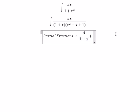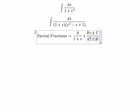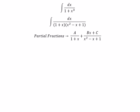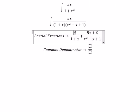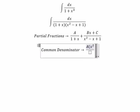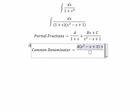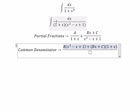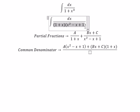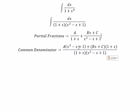Next we need to use a common denominator. So we have A multiplied with x squared minus x plus 1, and Bx plus C multiplied with 1 plus x. The denominator is the same. Now we need to expand this expression to get A times x squared minus x plus 1 plus Bx squared plus Bx plus Cx plus C over the common denominator 1 plus x times x squared minus x plus 1.